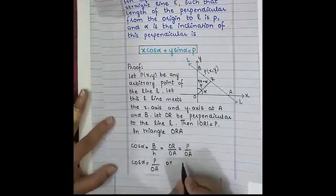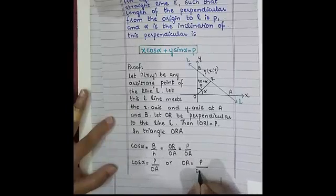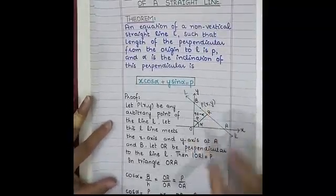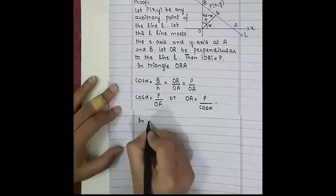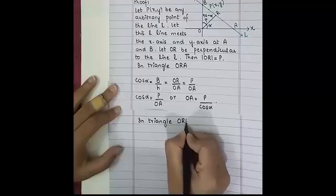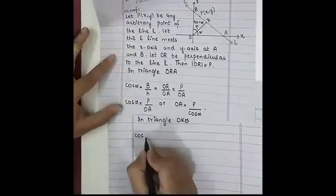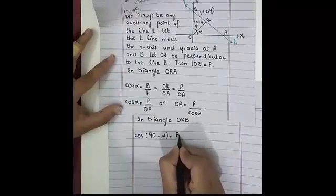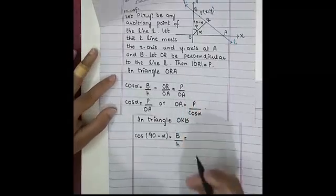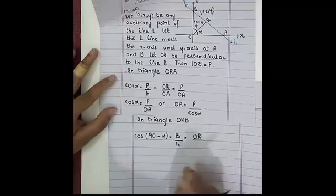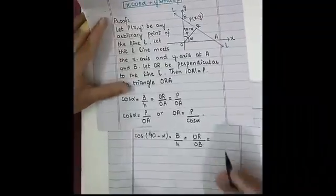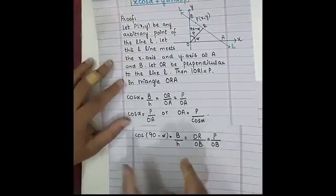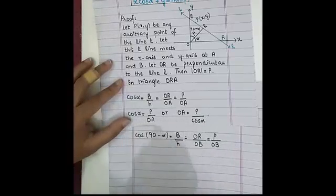Rearranging, OA equals P over cos alpha. That is the result for the first triangle. Now for the second triangle, triangle ORB: cos of angle (90 minus alpha) equals base over hypotenuse, where the base is OR and the hypotenuse is OB. Replacing OR with P gives P over OB.